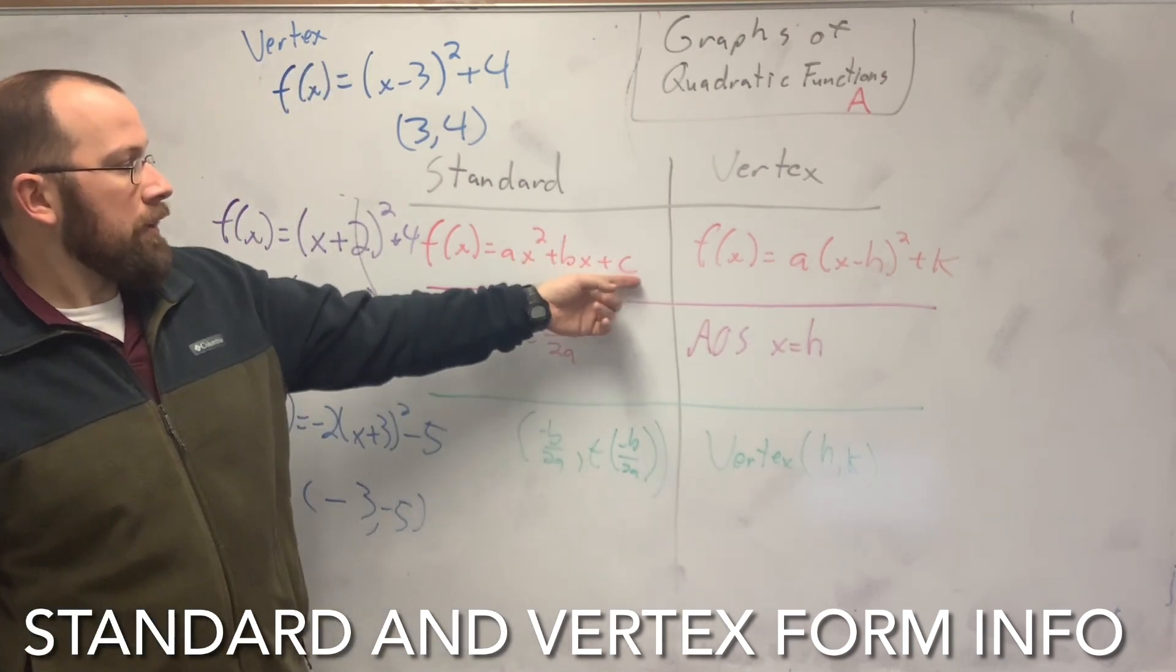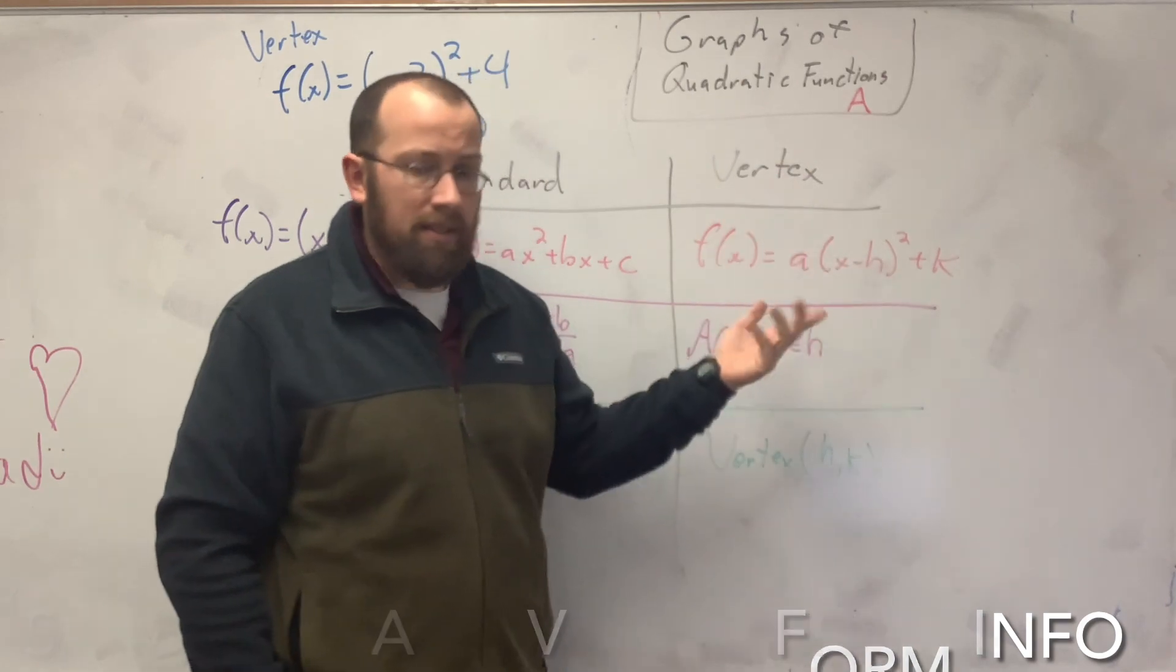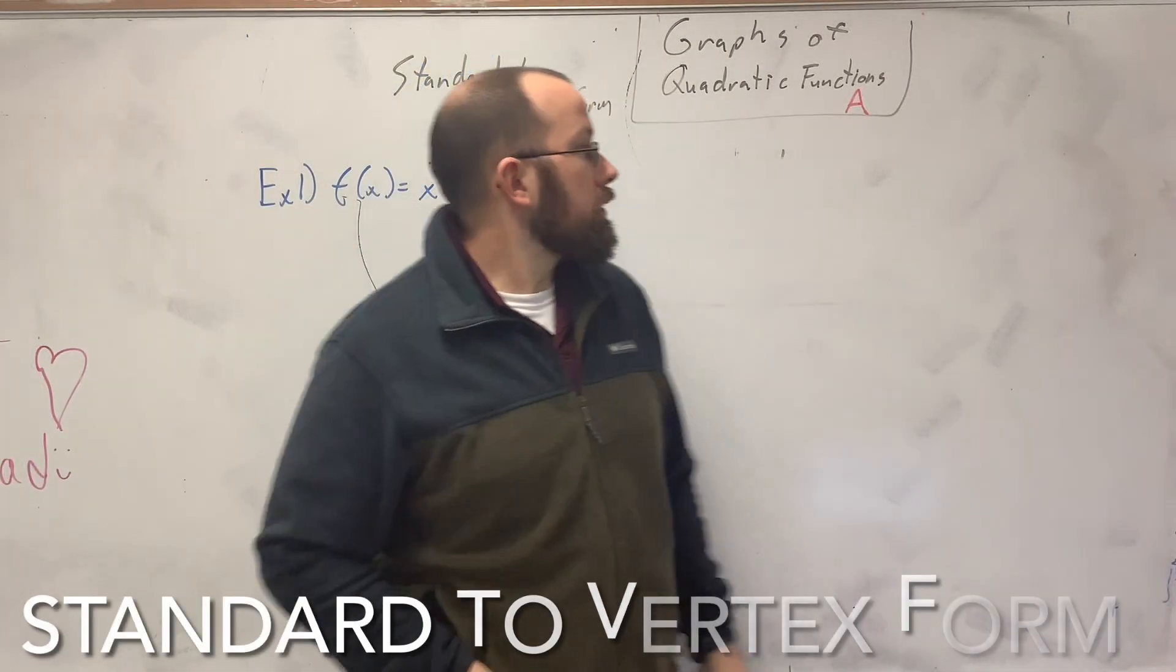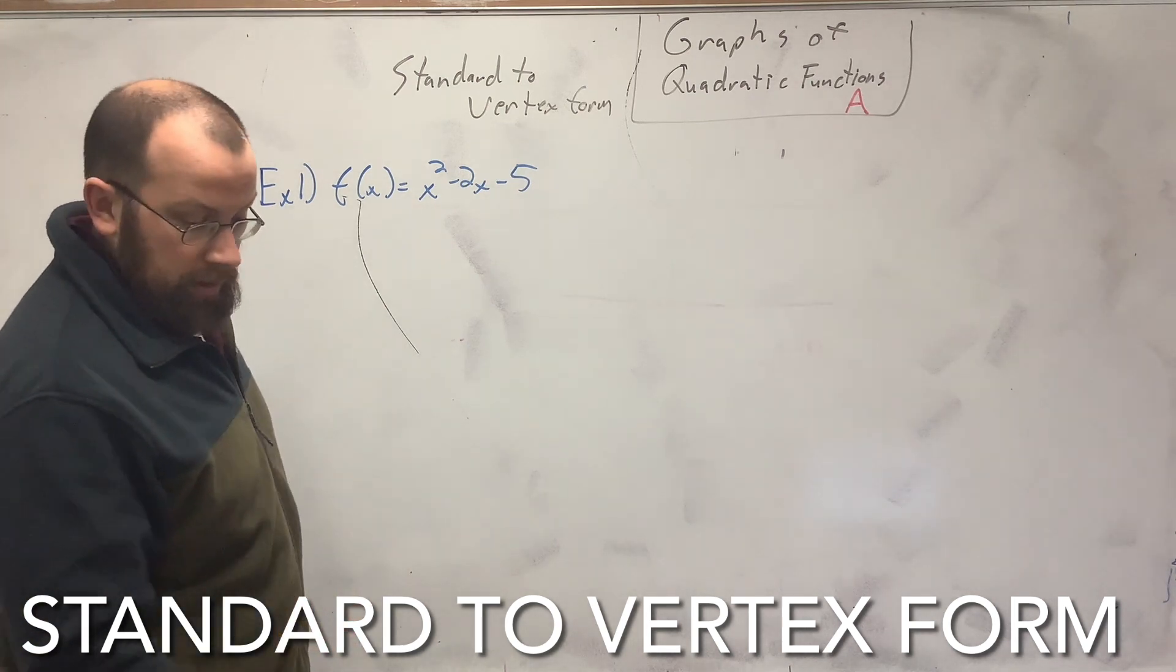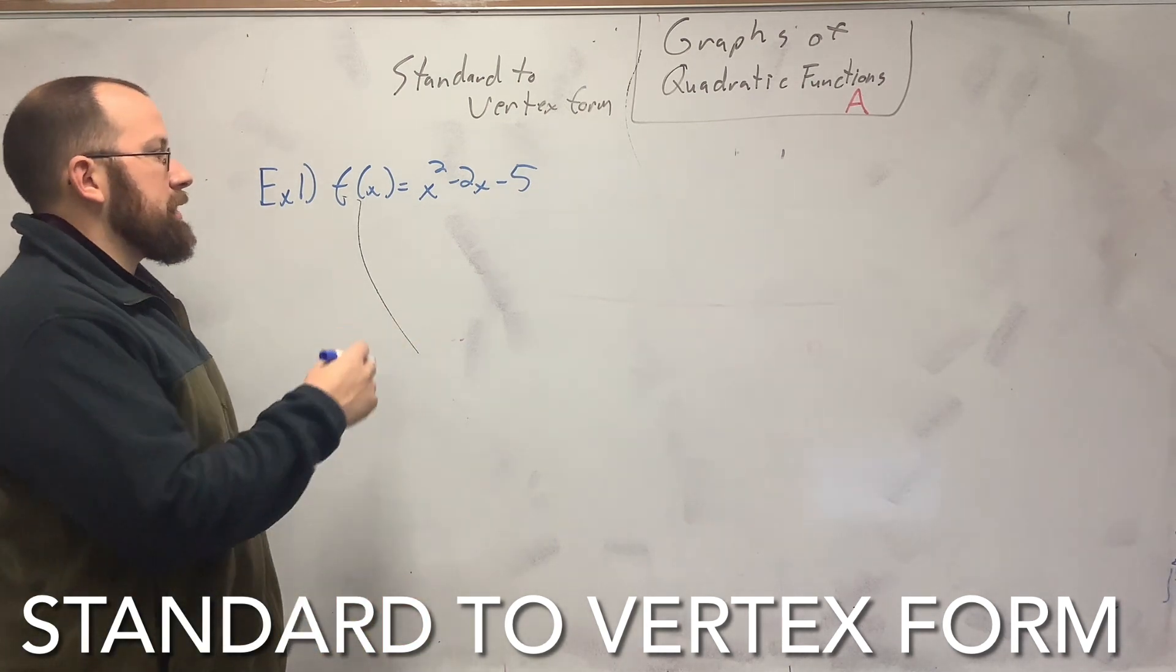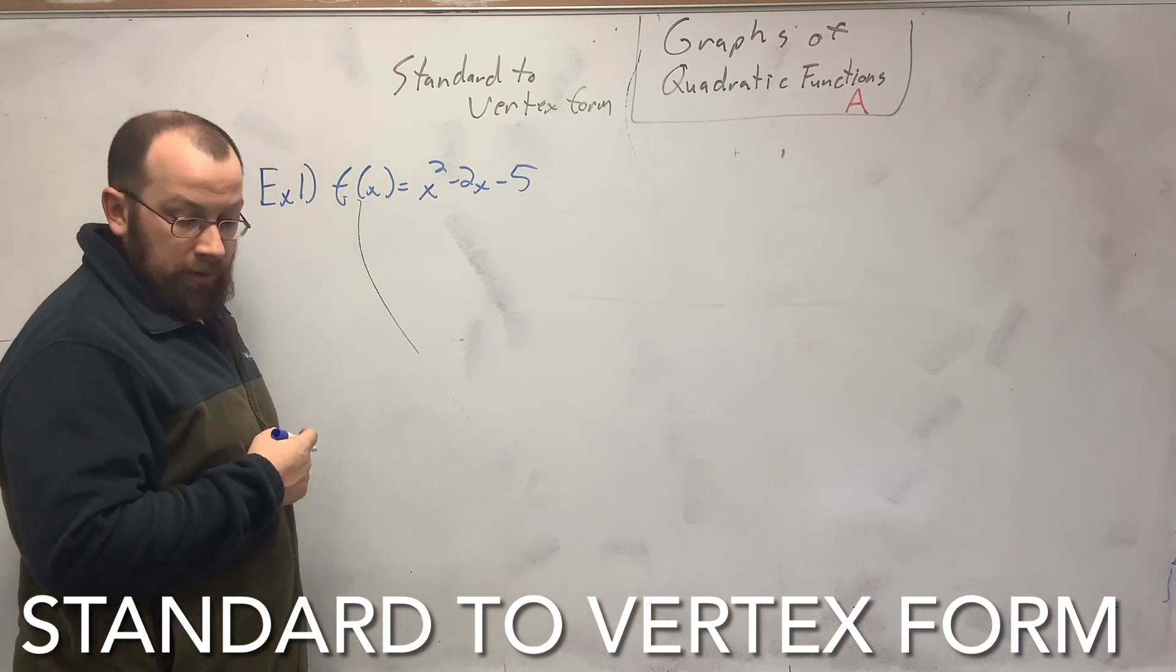Like in the standard form, you know the y intercept is the c. The big thing here is finding the vertex, hence the vertex form. The first thing we're doing is standard to vertex form. So we have to switch this. This is a couple step process. It's a lot like completing the square, if you remember how to do that.